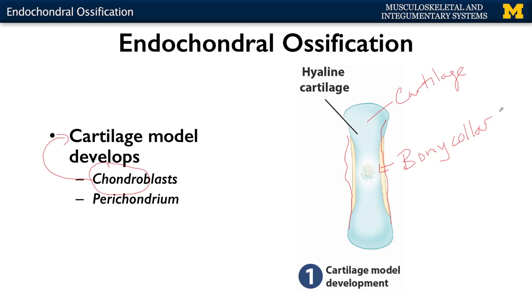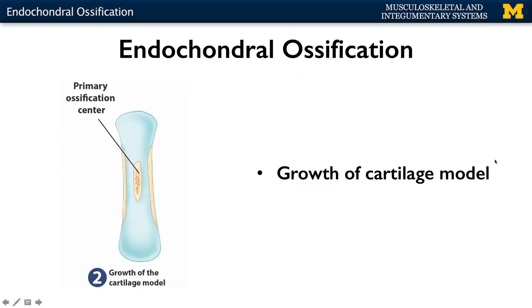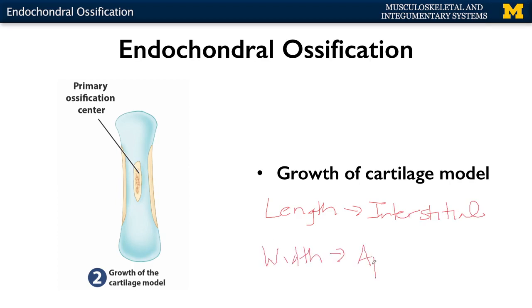The bony collar is unique in that it forms through intramembranous ossification — so even during endochondral ossification, you're going to have intramembranous ossification forming a small portion of the bone. The second step is the growth of that cartilage model: it grows in terms of length, which is called interstitial growth, and also in terms of width, which is referred to as appositional growth. The cartilage model gets longer as well as wider before complete replacement with bone.